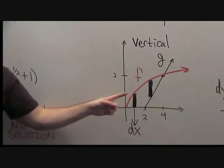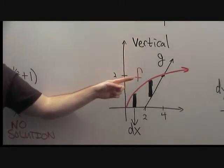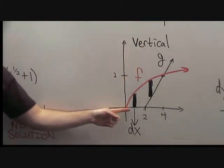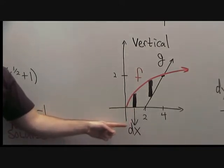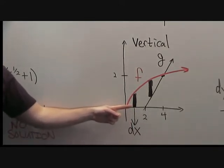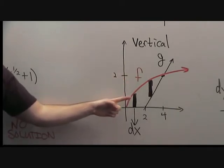The first choice is to use vertical strips. In the picture, these strips look like this, where they have a very narrow horizontal component, which is dx, and the height is determined by the region. Notice that if we take vertical strips, we have two different segments.